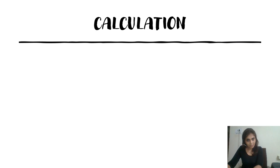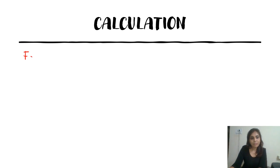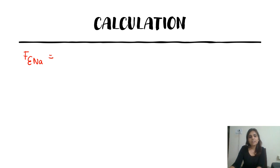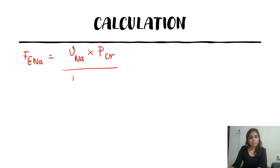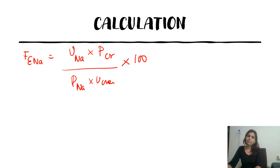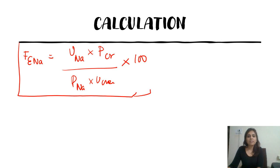Now comes the difficult part: calculation. We know the definition, we know the significance, but we need to know how to calculate it. The formula for fractional excretion of sodium is: urinary sodium multiplied by plasma creatinine, divided by plasma sodium multiplied by urine creatinine, expressed as a percentage. This formula looks complicated, but if I tell you the basis of it, you will be able to memorize it easily. The basis is the definition itself.